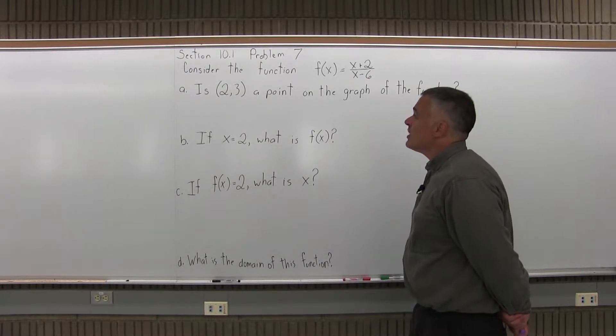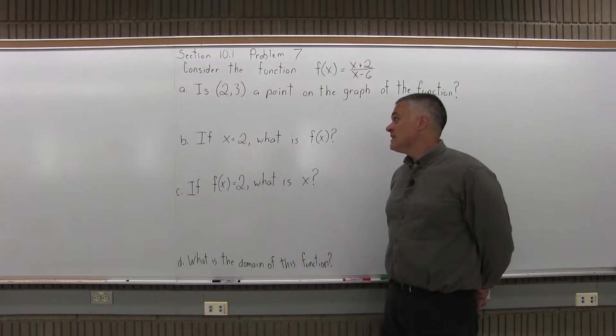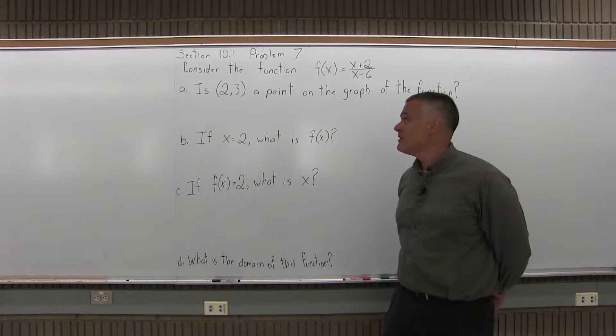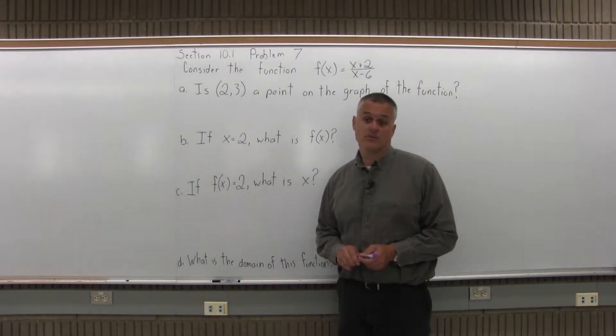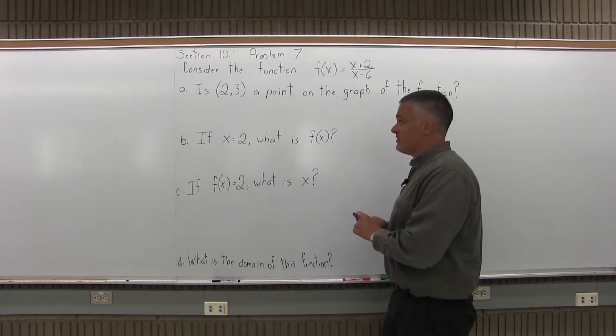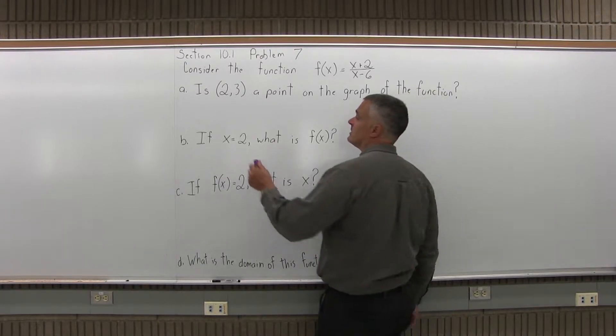The first question is, is 2 comma 3 a point on the graph of the function? They're basically asking if you put in a 2, do you get out a 3? If we had the graph of the function you could just look and determine, but you're not given the graph. So with some math you can see if you put in a 2, do you get out a 3 or something else?